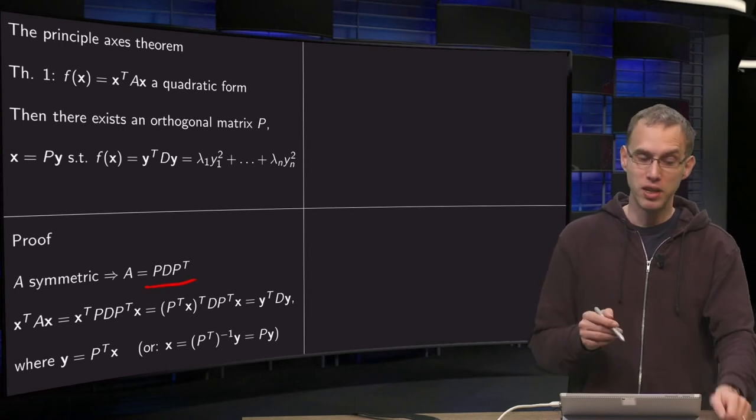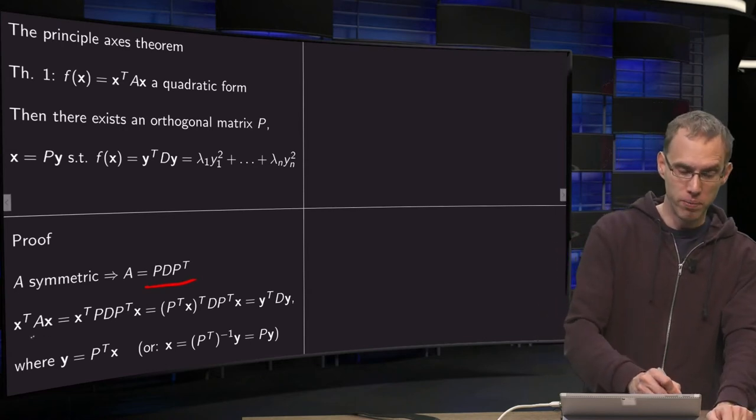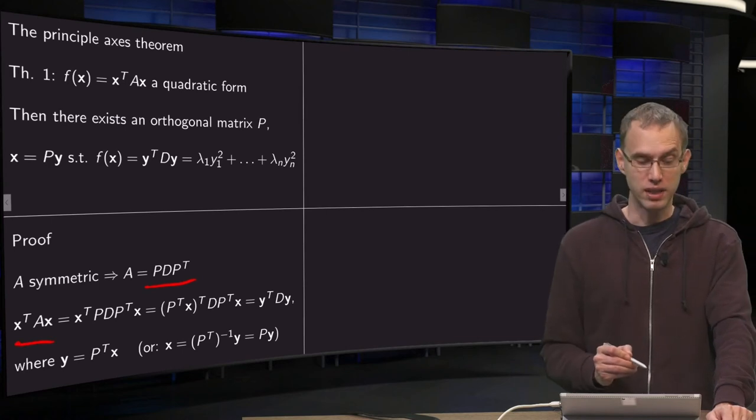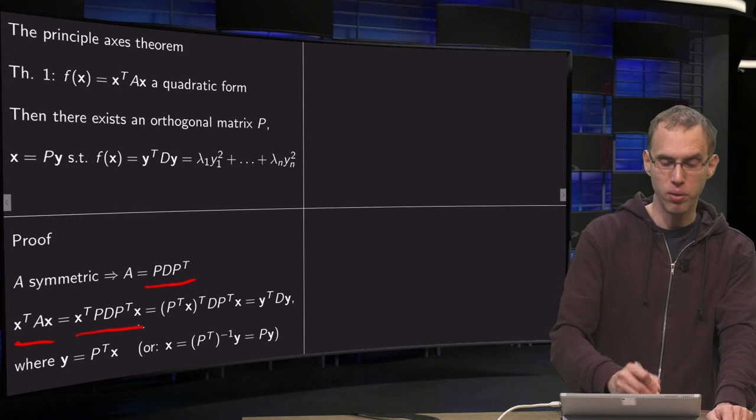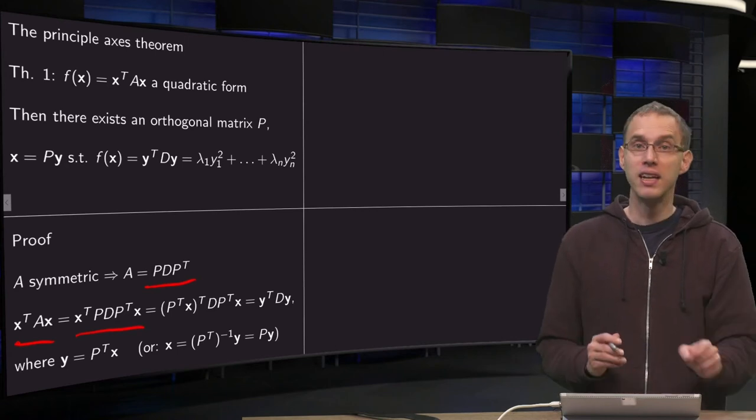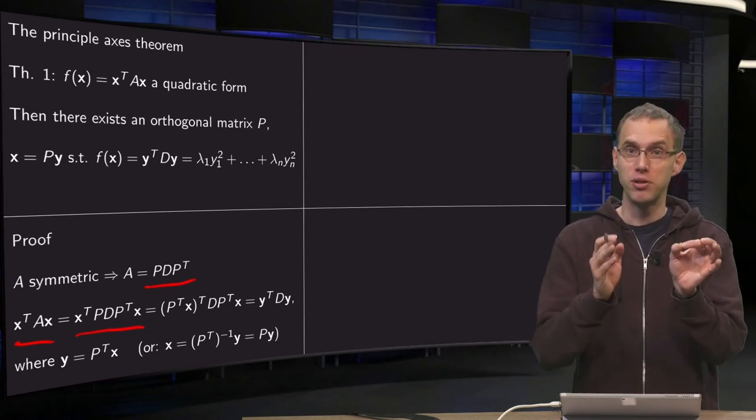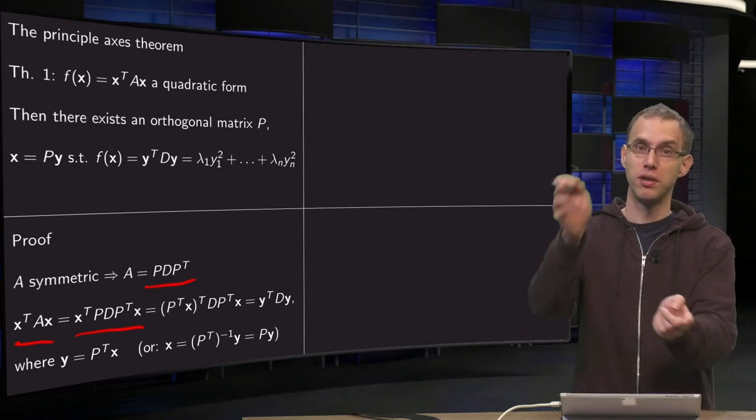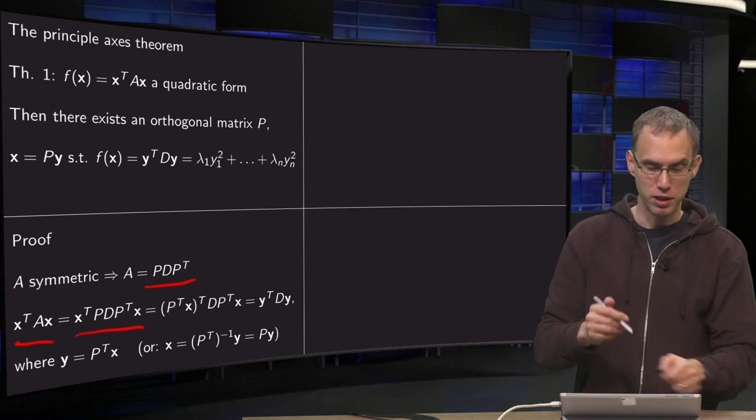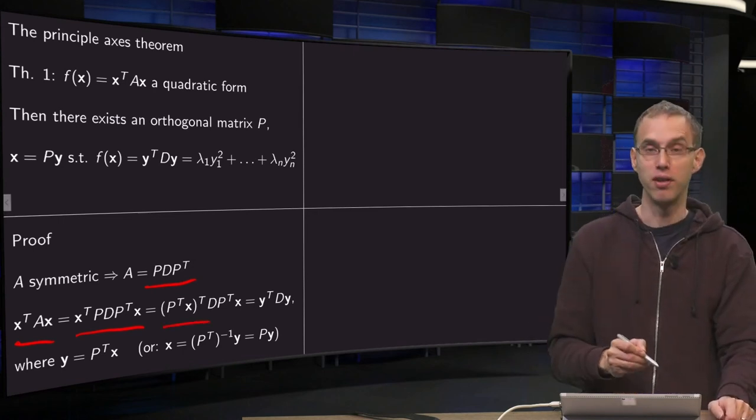So that is nice. We can use that as follows: we know that x transpose times A times x is our quadratic form. Substitute what we know about A. Then we use that x transpose times P—we can form one transpose, but then we have to invert them—so we get P transpose times x transpose. That is what is happening over here.